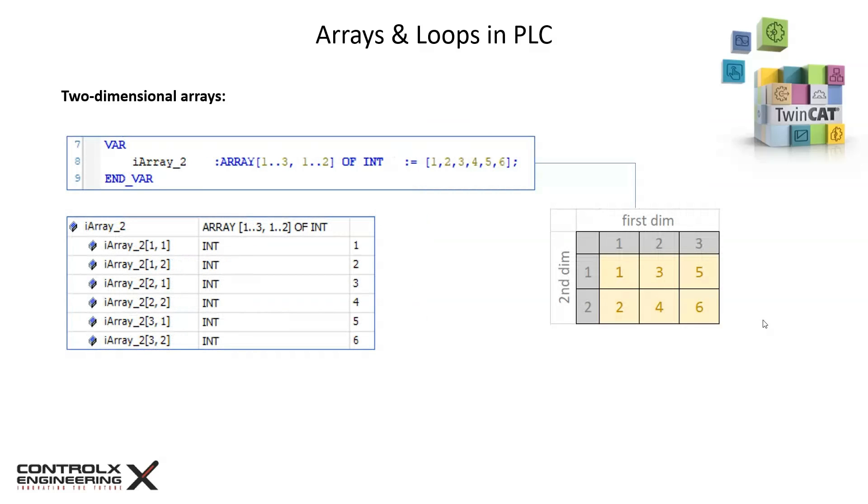Here we are declaring a two-dimensional array of integers with initial values as shown. The array gets filled up a column at a time. As you can see, column one gets filled up with the first two values, followed by column two and so on.